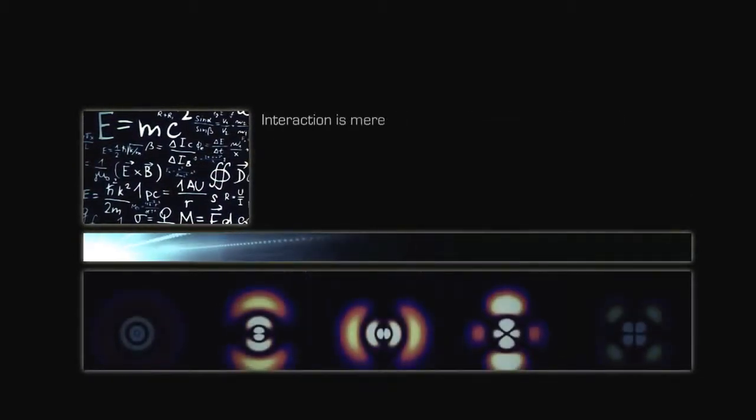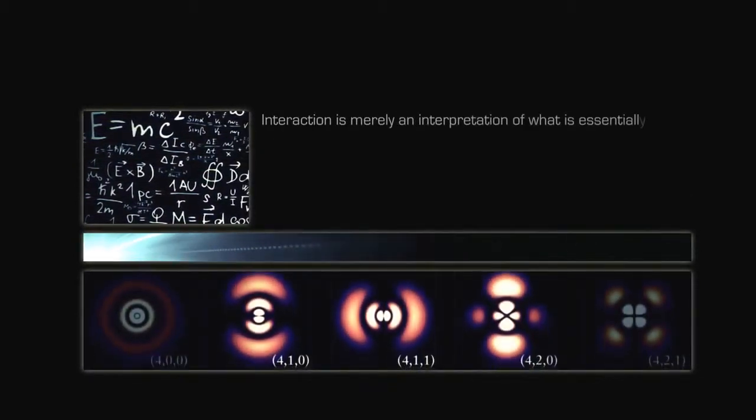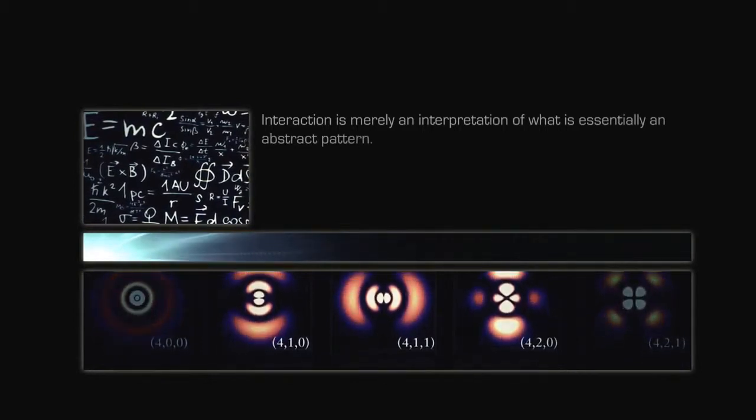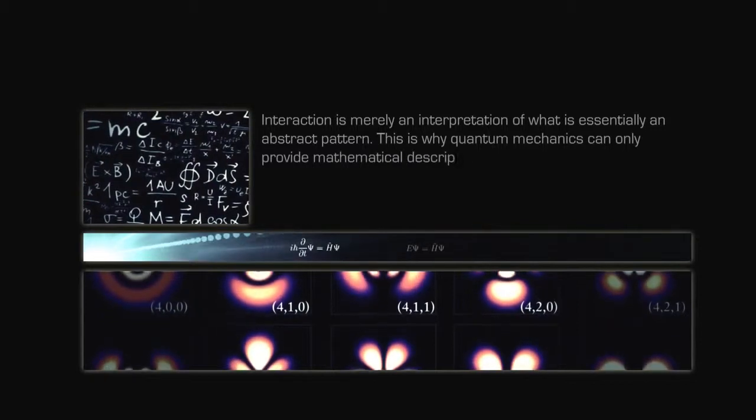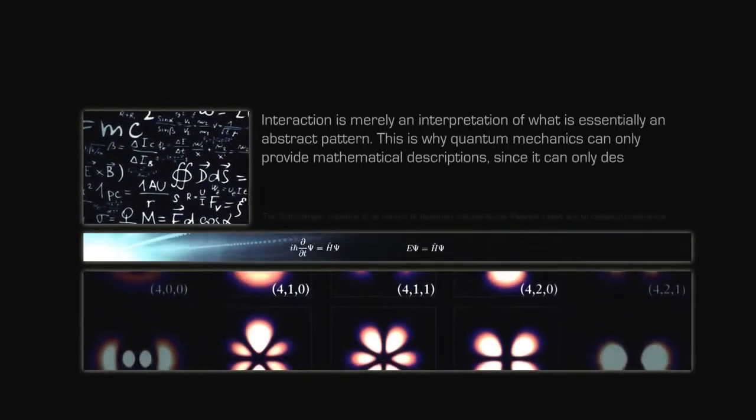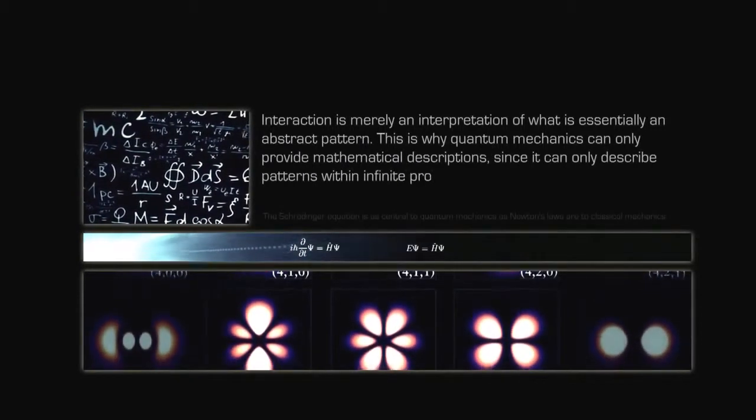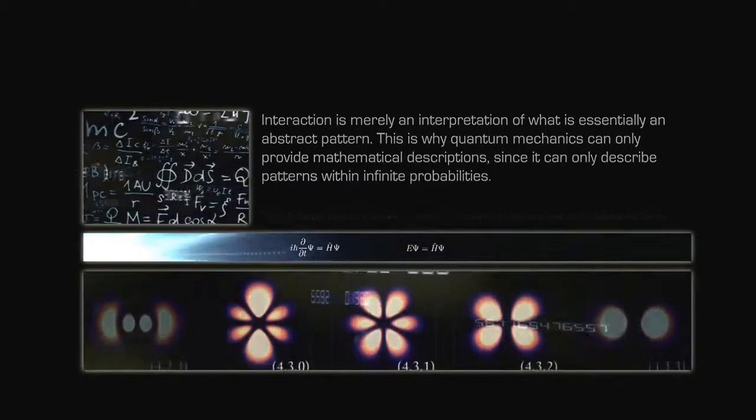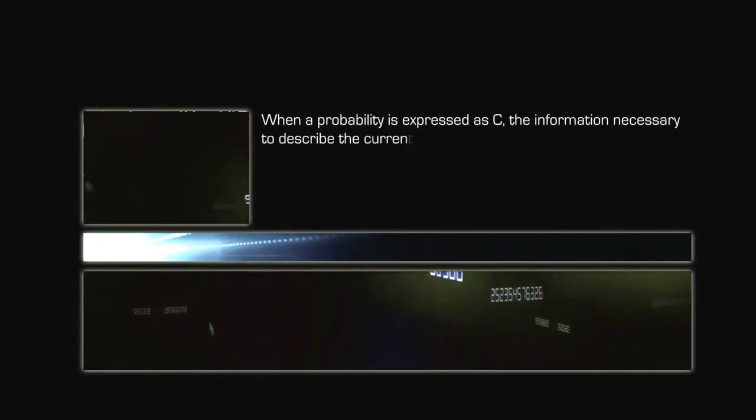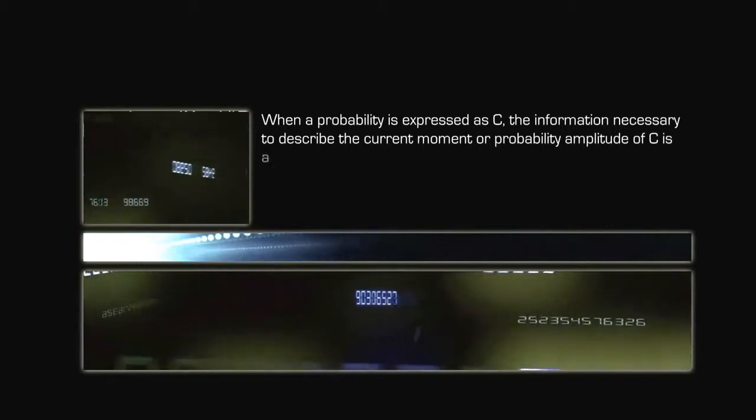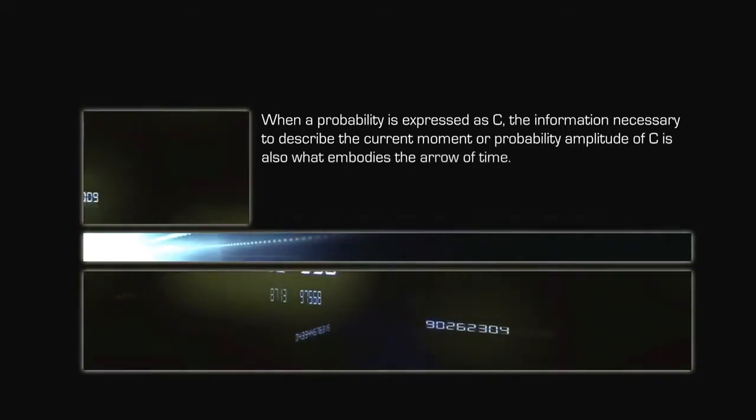Interaction is merely an interpretation of what is essentially an abstract pattern. This is why quantum mechanics can only provide mathematical descriptions, since it can only describe patterns within infinite probabilities. When a probability is expressed as C, the information necessary to describe the current moment or probability amplitude of C is also what embodies the arrow of time.